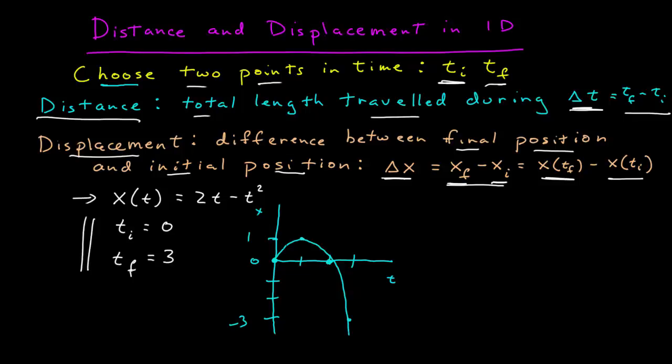I know that one is in fact the highest value it goes to, because I can find the maximum of this function by taking the derivative and setting that equal to zero. dx dt equals two minus two t equals zero. So the maximum occurs at t equals one. And I can see from my graphical representation that it's a maximum.